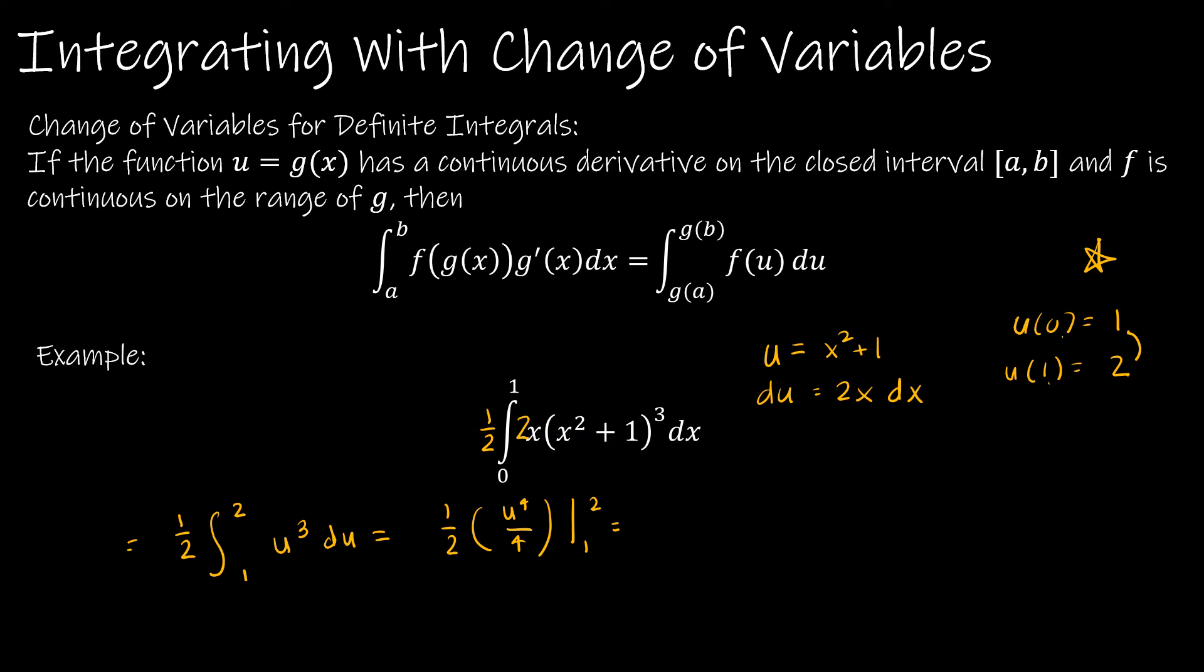So 2 to the fourth over 8, that's 16 over 8, which is 2. And then plugging 1 in, 1 half times 1 fourth, which would be minus 1 eighth. So 2 minus 1 eighth is 15 eighths. And I get the exact same solution I did before.